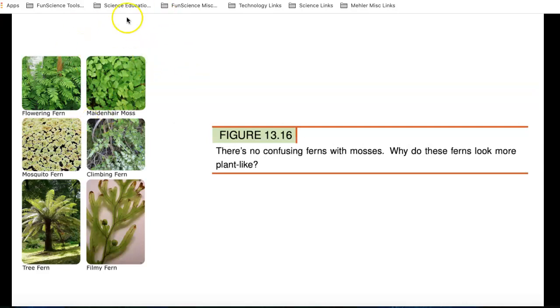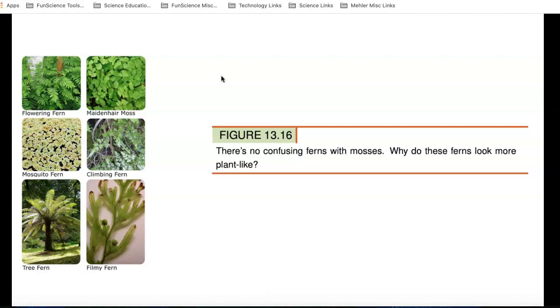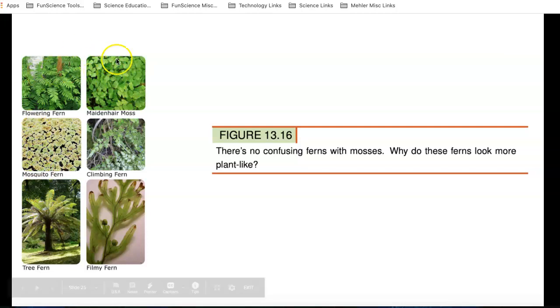In this picture, we have one picture of moss. And then we have all these different ferns. And what the book is asking is, why do these ferns look more plant-like? Well, if we look at them, we can see that they have leaves and they're vascular. Moss doesn't have any xylem and phloem. Doesn't have any tubing. Doesn't have any internal tubes.